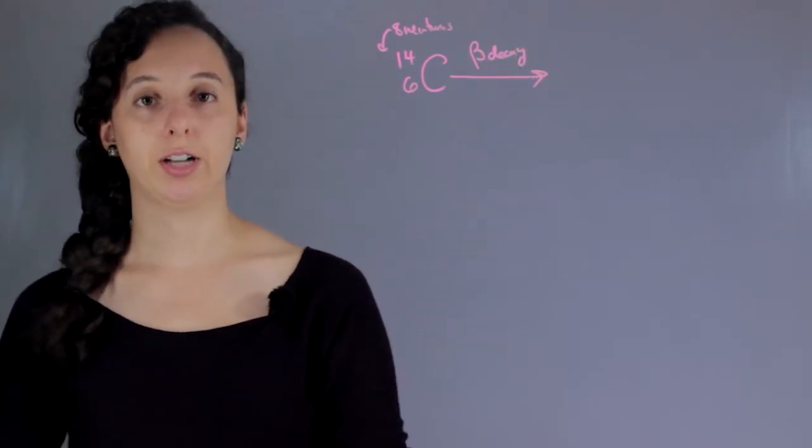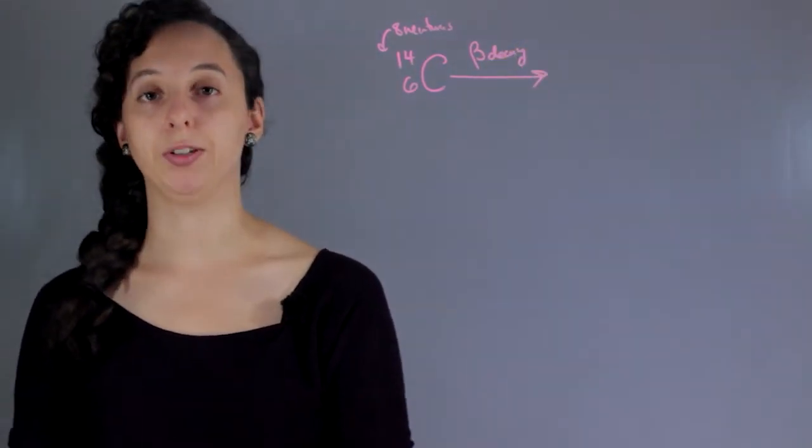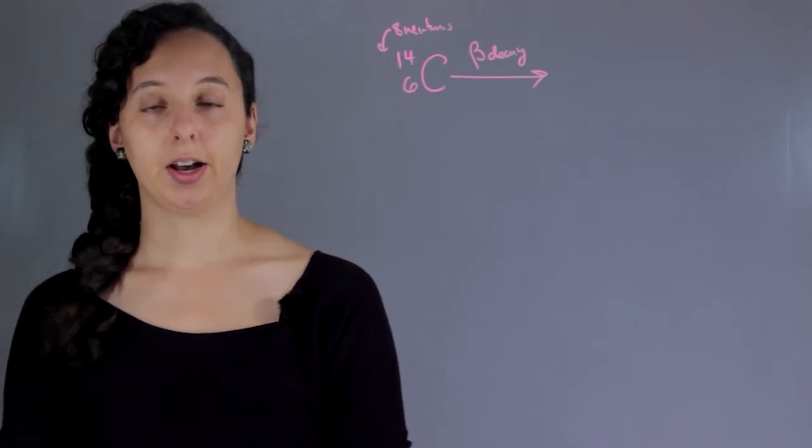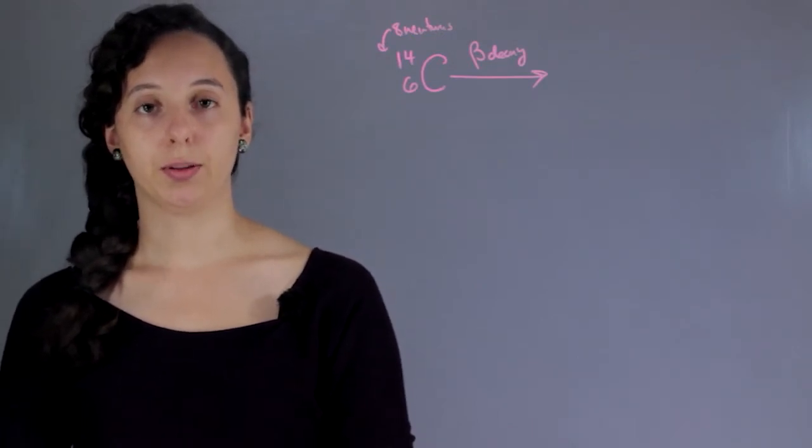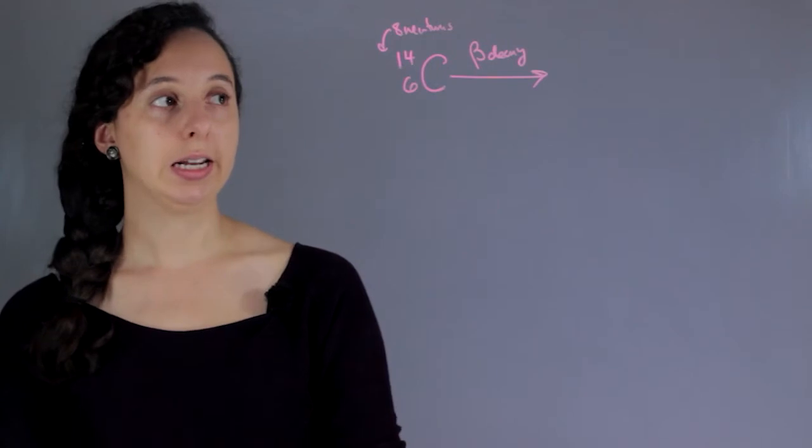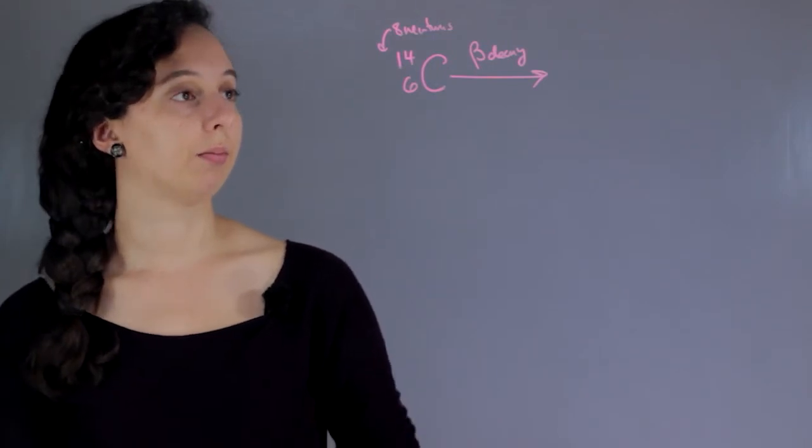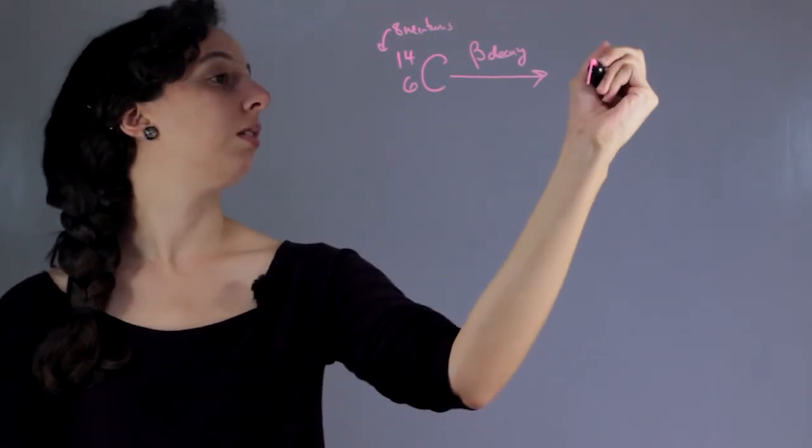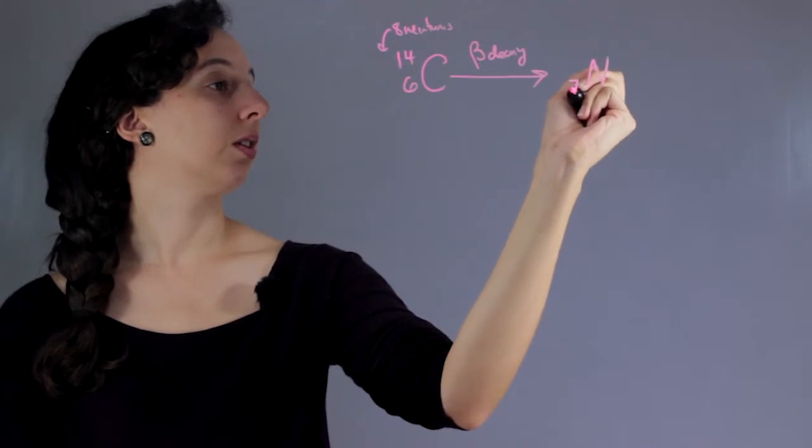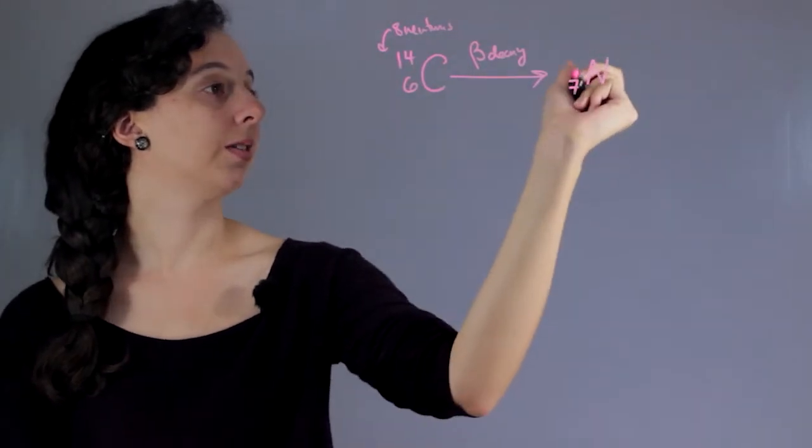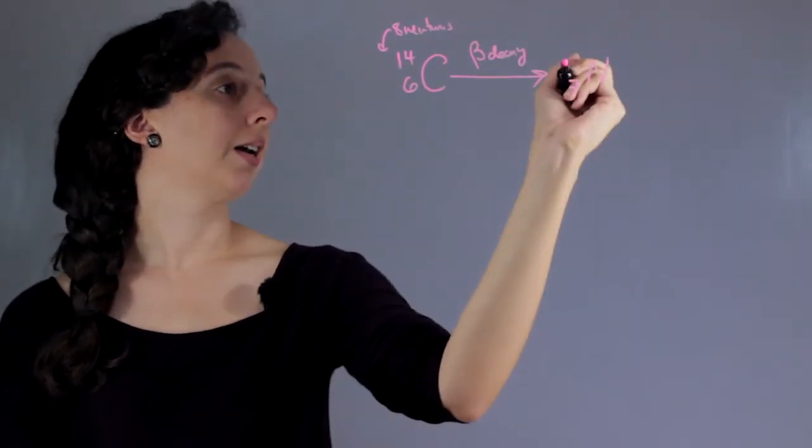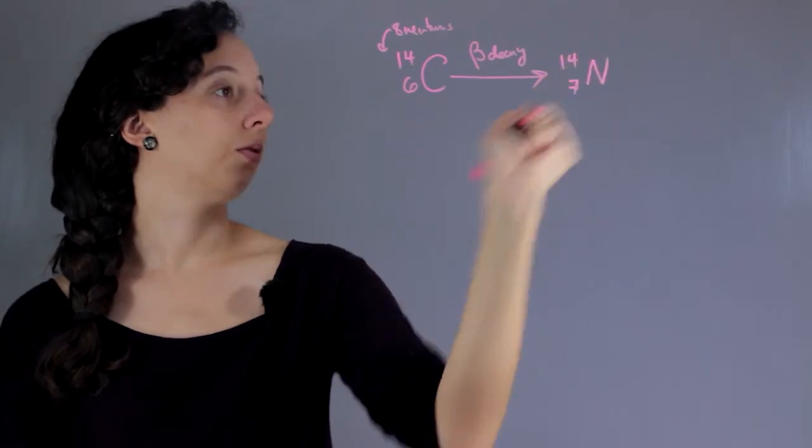Every different type of decay has a name just based on what it does, and it basically just follows the pattern. So in beta decay, it basically promotes the atomic number 1-up, so into 7, which is nitrogen, and it still has 14 neutrons.